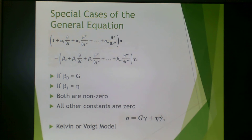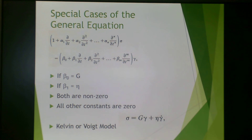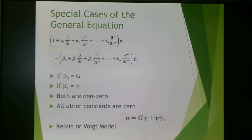Taking beta sub 0 as the rigidity modulus and beta sub 1 as viscosity, with both assumed non-zero and substituted into the general equation, we recover the Kelvin or Voigt model equation. It is more complex but still describes a viscoelastic material in terms familiar from before.